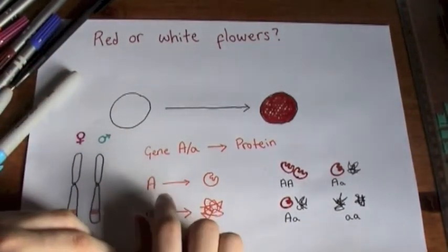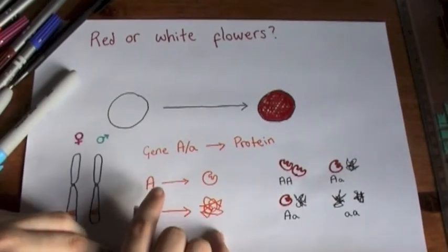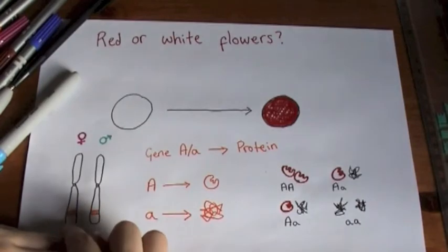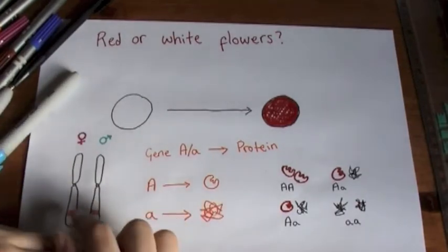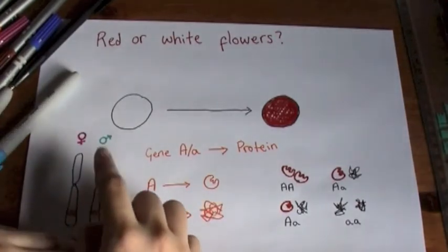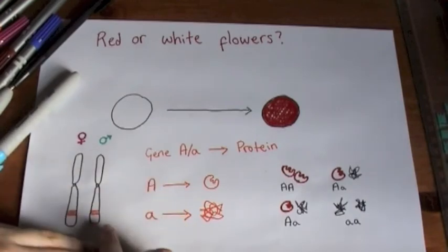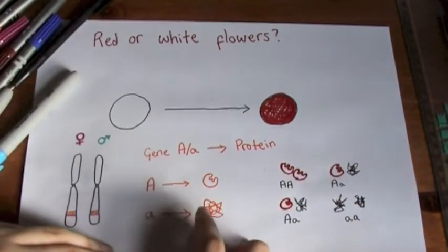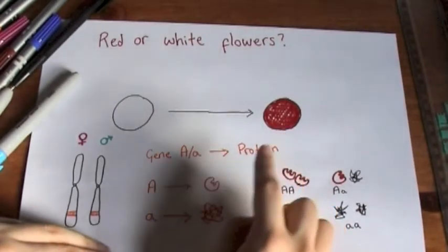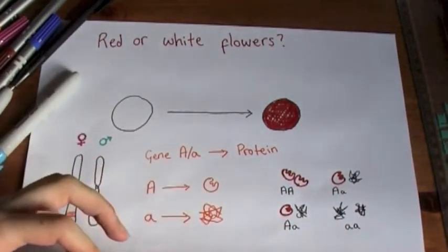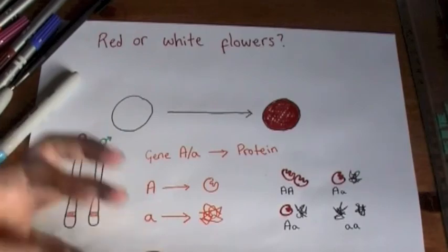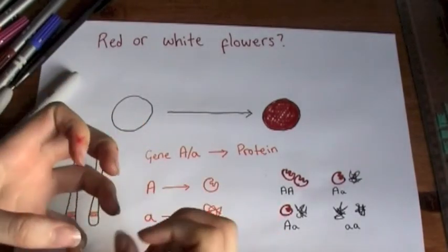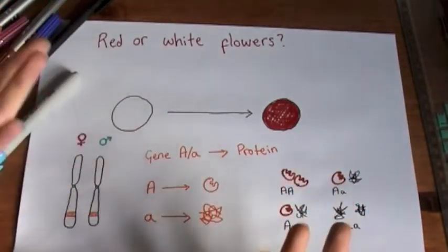So we say that this is dominant because even when we only have one version, so say our chromosome from our mother had it, but the chromosome from our father didn't have it. So we'd be one of these two genotypes, we'd be big A, little a. We still show the trait because our functional protein is being made and it's working, it's doing its job. Normally we'd have two of them, but even if we've got one, we can still cope and we can still make our lovely red pigment and get beautiful red flowers.